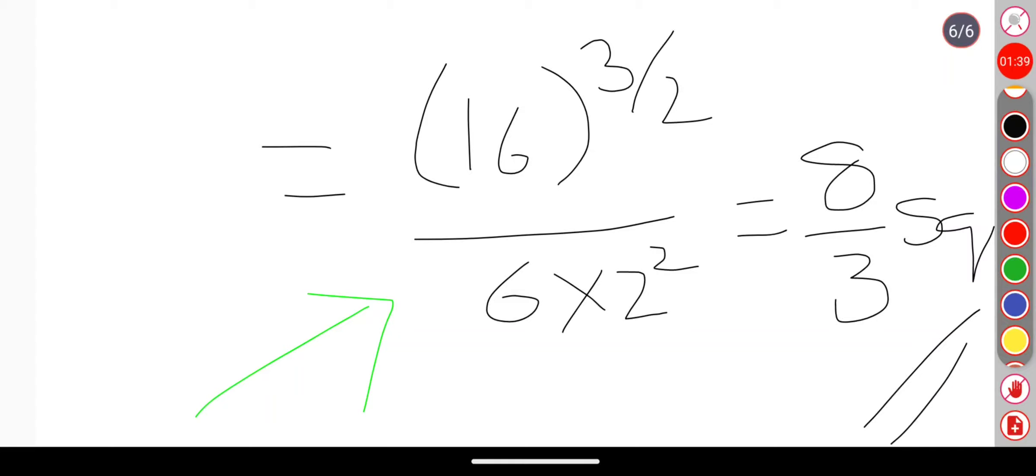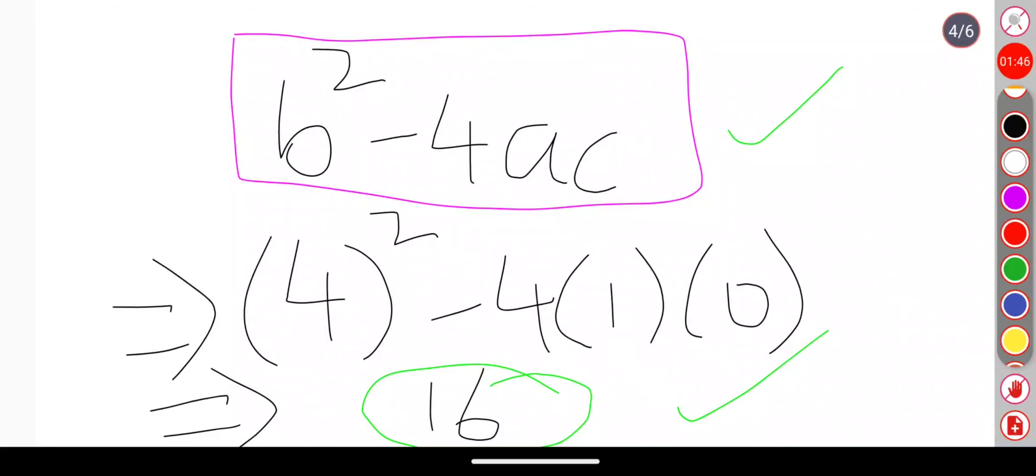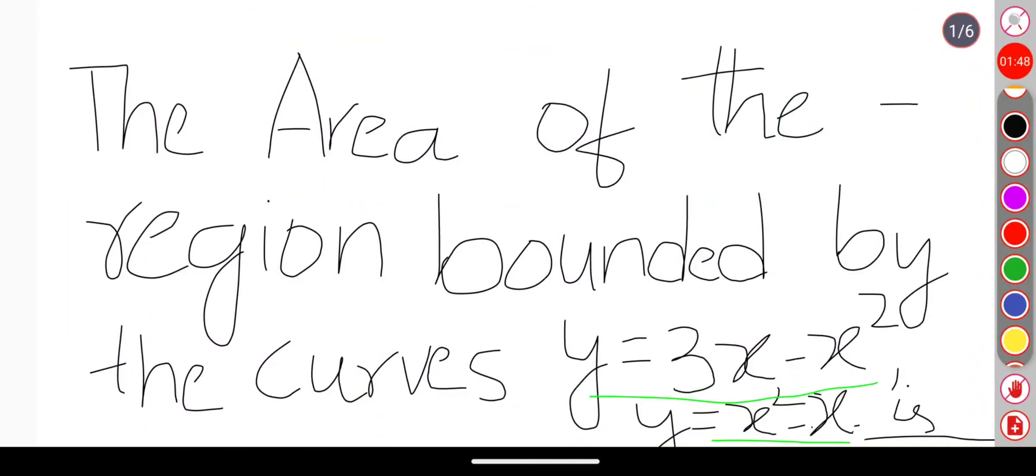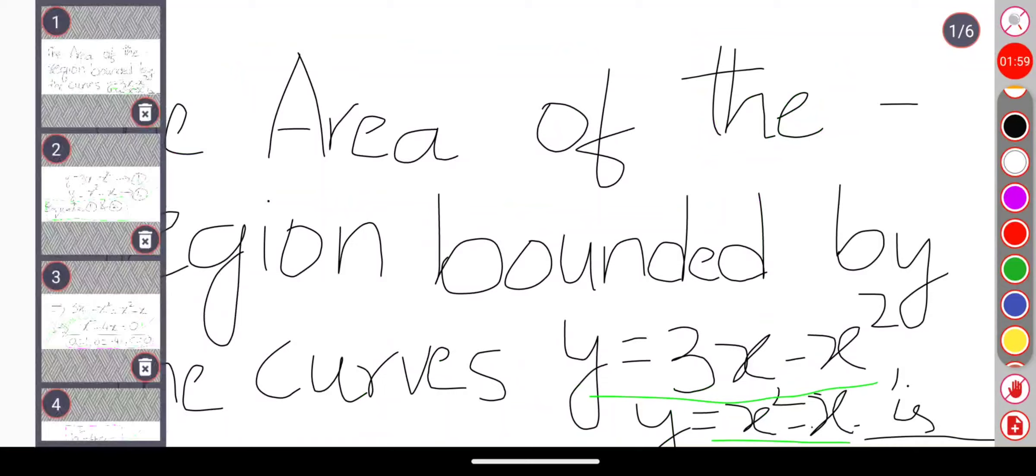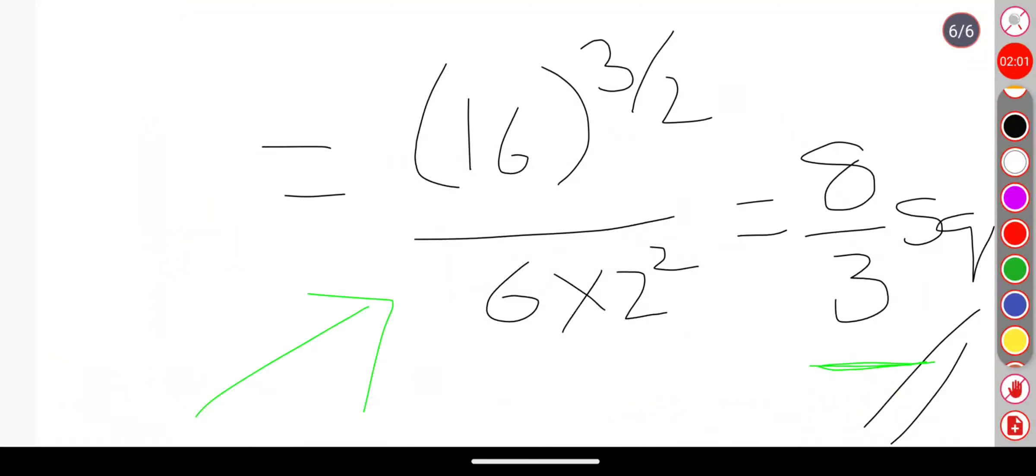After simplification I am getting answer as 8 by 3 square units. So we can say that the area of the region bounded by the curve y equals 3x minus x squared and y equals x squared minus x is 8 by 3. So 8 by 3 is the answer to this question.